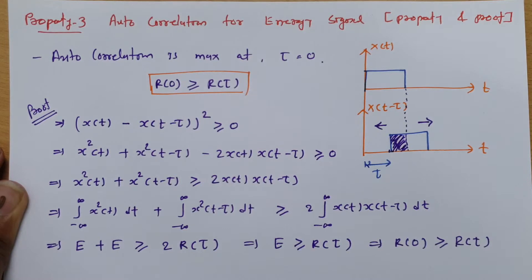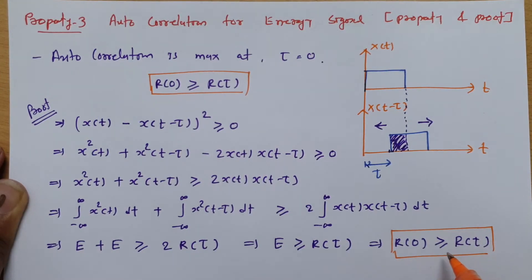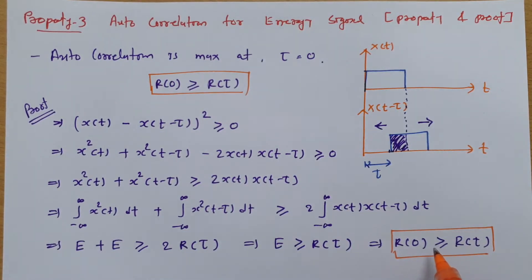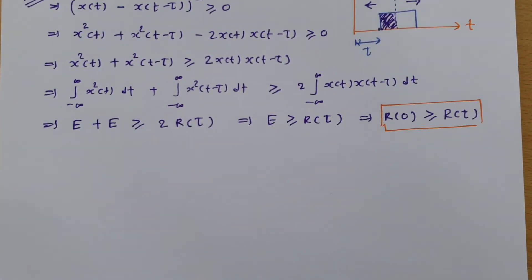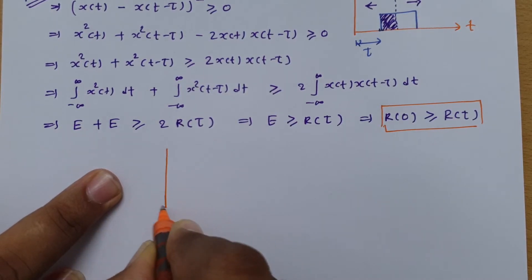So here we have clearly proved the third property: autocorrelation is maximum at tau equals zero, and autocorrelation decreases as you increase the shifting parameter tau. This behavior holds for random signals as well — for a random signal, autocorrelation decreases drastically as you increase the value of tau.